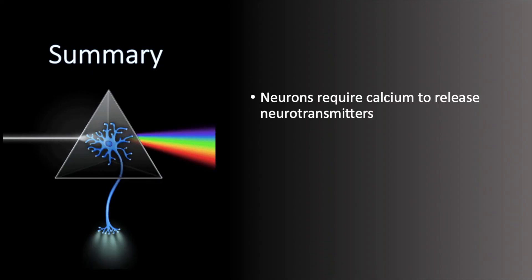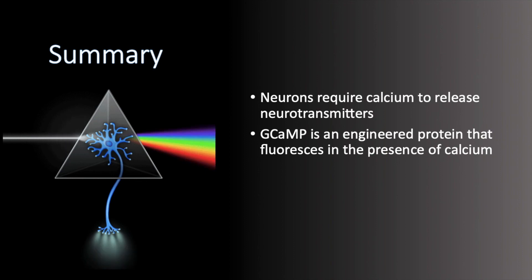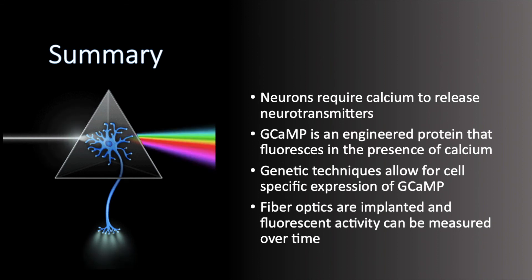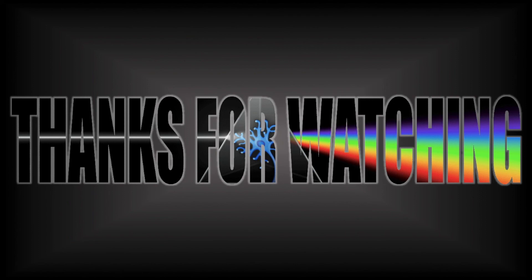In summary, neurons require calcium to release neurotransmitters. GCaMP is an engineered protein that can fluoresce in the presence of calcium. Genetic techniques allow for the cell-specific expression of GCaMP. Fiber optics are implanted and fluorescence activity can be measured over time. Thank you for watching. Sources for all the information in this video can be found in the description below.